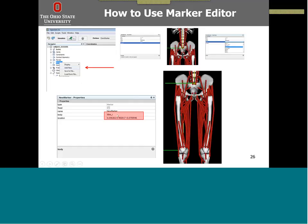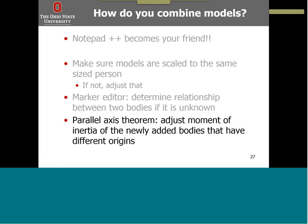Lastly, you want to use the parallel axis theorem to adjust the moments of inertia of newly added bodies that have different origins. This came into play because there were different definitions of 'torso' — whether it was the entire spine or the spine and ribcage — so I had to adjust for different origins and parent bodies. You really want to make sure that your moments of inertia are consistent and that your model is representative of one subject's size.